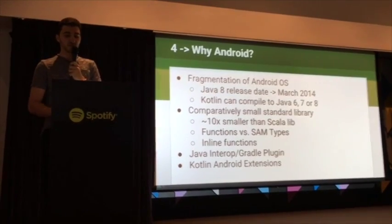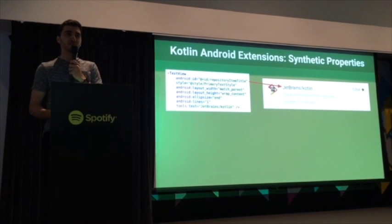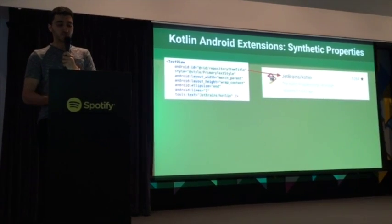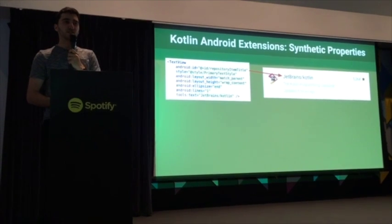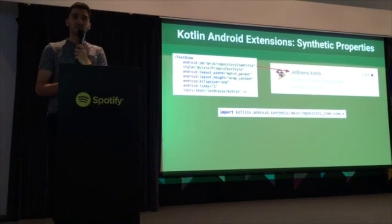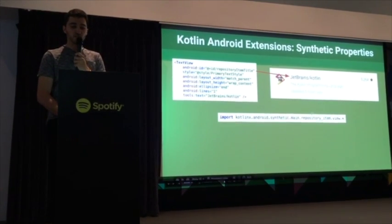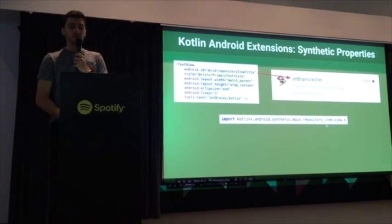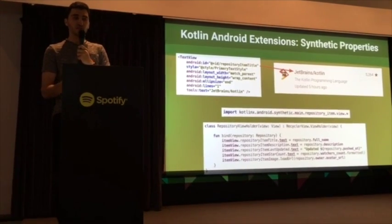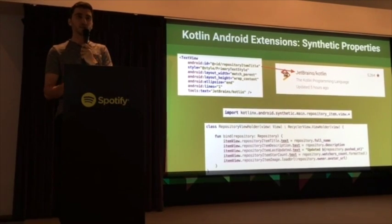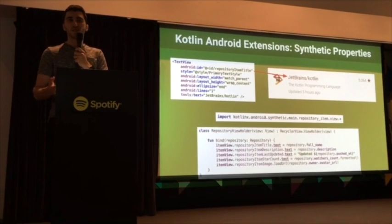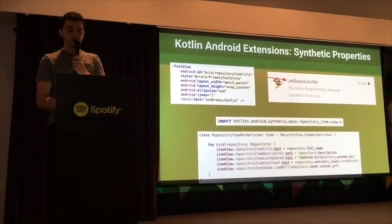The JetBrains team also spent extra time developing something called Kotlin Android Extensions — a pretty cool plugin for Android development. The way it works is: after you enable the plugin, you just add an import line in your Kotlin file for the XML layout file. Then the plugin injects synthetic properties on either the view or the activity. This removes the need for finding views by ID or annotating them and using something like Butter Knife — so even less code.